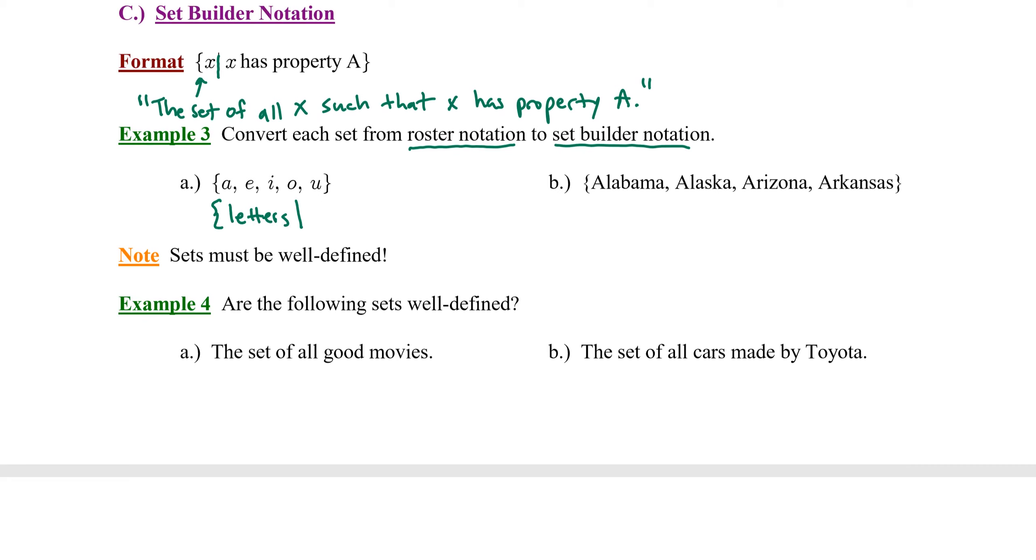We want to convert this to set builder notation. Now set builder notation always has the same format. We write the set of all. Now we need to think of a representative for the items in that set. Notice these are letters. The set of all letters such that the letter is, and in this case the property they have in common is the fact that they are all vowels. Now you could also shorten that and call it the set of all X, such that X is a vowel, that would also be acceptable. But you've got a little bit of freedom in how you handle that representative.